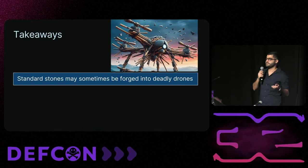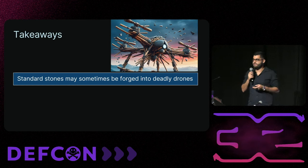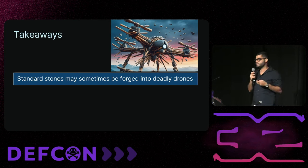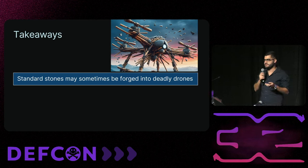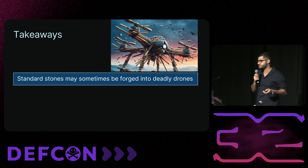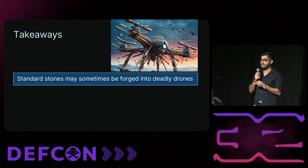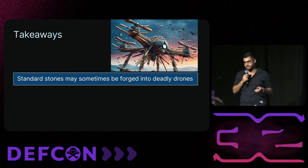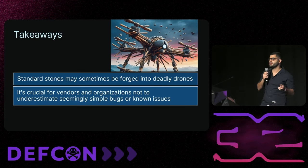Now it's time to talk about takeaways. Our first and most significant takeaway is that standard stones may sometimes be forged into deadly drones — as a hacker you often have limited tools at your disposal. Reflecting on our research, even seemingly basic or unimpressive abilities can sometimes be transformed into much more powerful capabilities. We're all familiar with typical vulnerability chains addressing known issues like bypassing stack cookies or memory corruption mitigations, but sometimes you might have unconventional abilities — like forcing an endless loop that repeatedly opens a file — that allow you to achieve your ultimate goal through very unconventional flows.